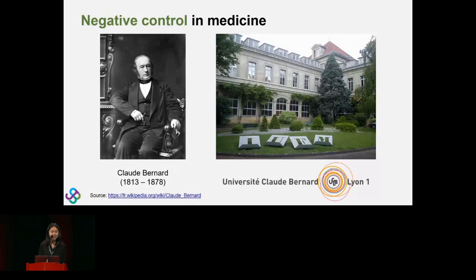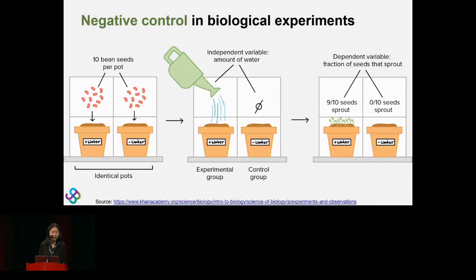In biological experiments, negative control is a must. From this simple cartoon, if we want to evaluate the effect of water on plant growth, we plant the same number of seeds in the treatment group and the control group, but give water only to the treatment group. Then we compare the outcome to assess whether water plays a role. In this case the negative control group is a concrete thing.